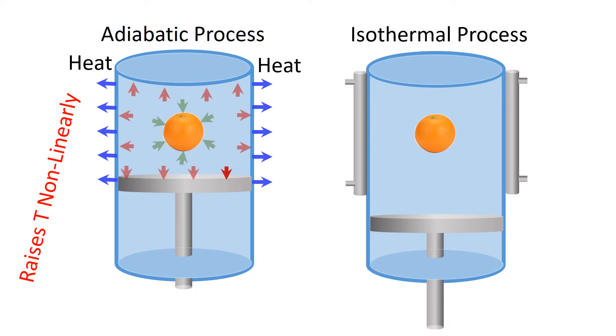If we want to operate at constant temperature, that is isothermally, then we need to have a cooling system to remove heat generated from the high pressure process.